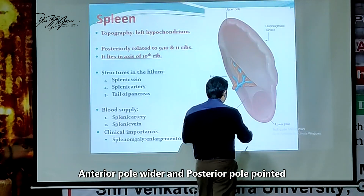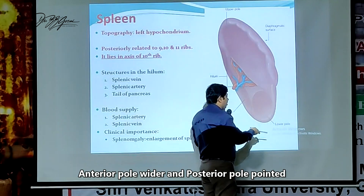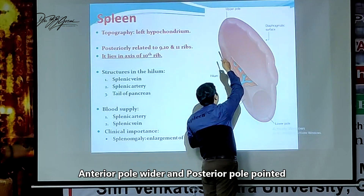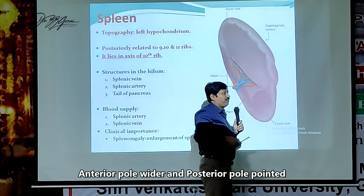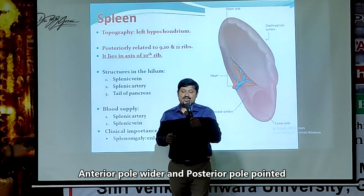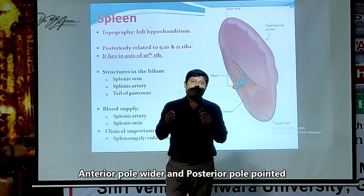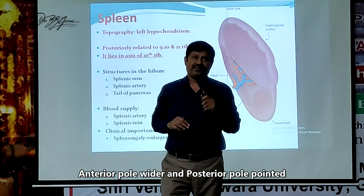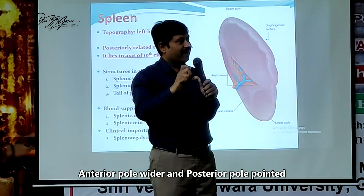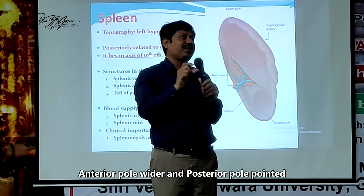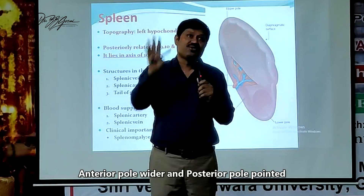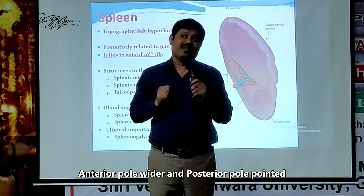So the anterior pole is the wider one and the posterior pole is the narrower, pointed one. The anterior part is wider and the posterior part is pointed. So you can identify the poles based on this feature.